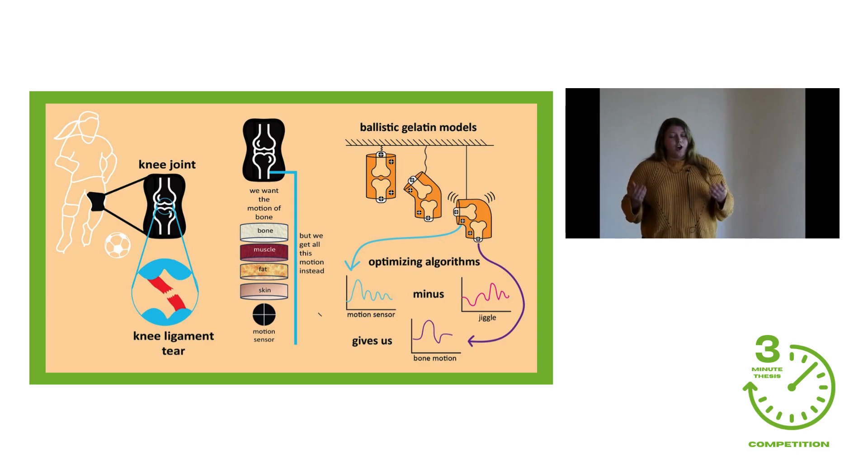To test this, I'll be dropping my knee models with different test conditions, being the different angles of the knee models, with motion sensors attached to both the ballistic gelatin and the bones of my models. I will then be creating an algorithm that can remove the jiggle from the soft tissue artifact motion data to get to that bone motion data that we want.